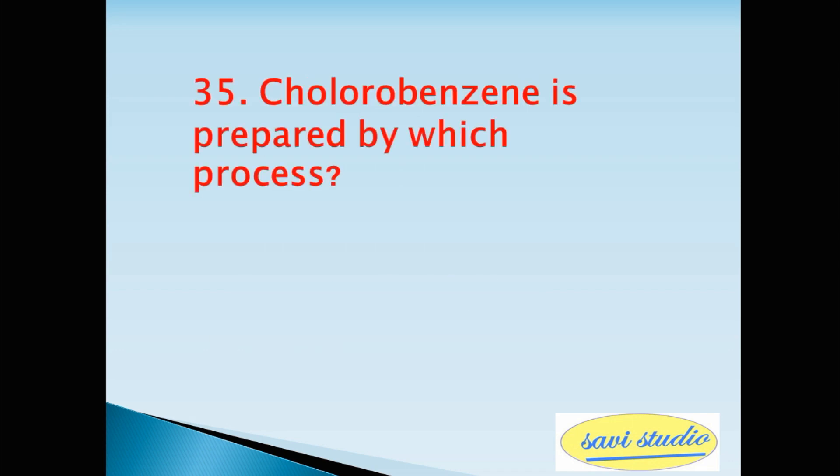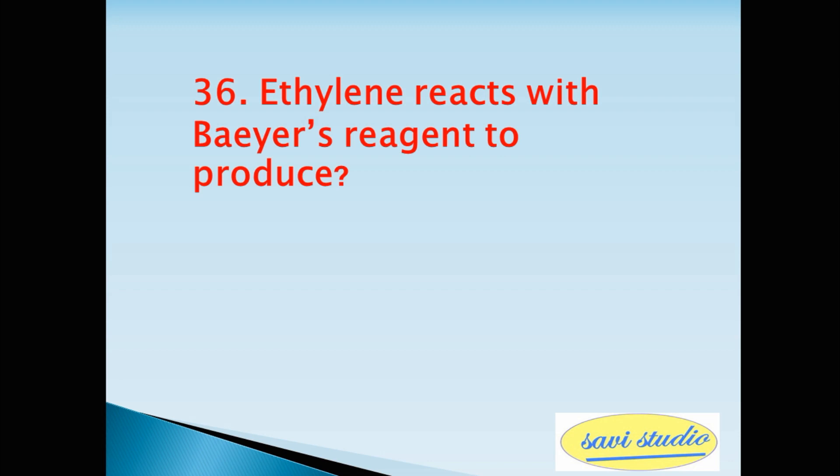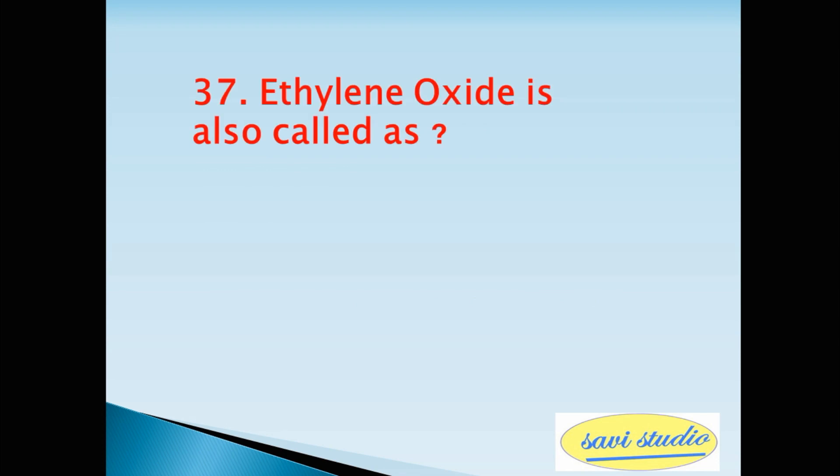Thirty-fifth question, chlorobenzene is prepared by which process? Answer Raschig process. Thirty-sixth question, ethylene reacts with Bayer's reagent to produce? Answer ethylene glycol. Thirty-seventh question, ethylene oxide is also called as? Answer Oxirane.